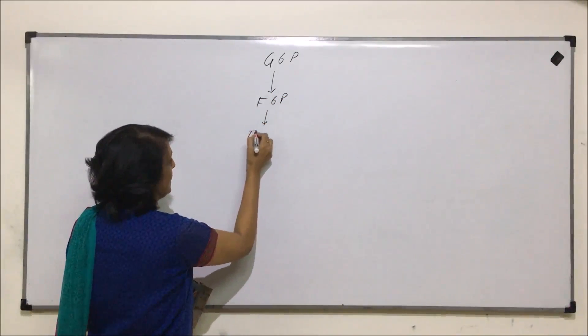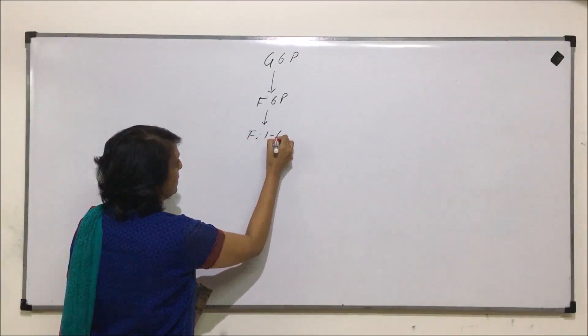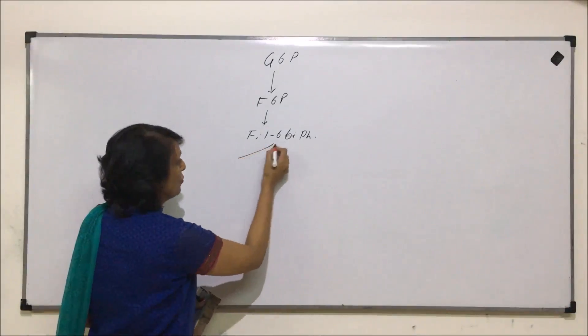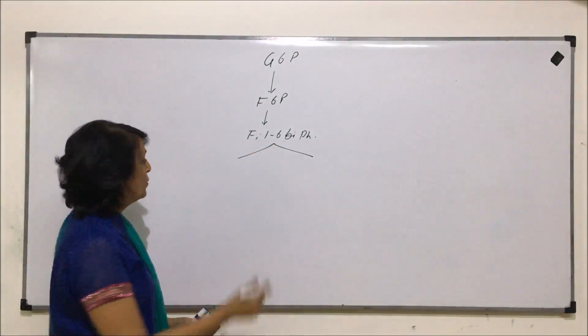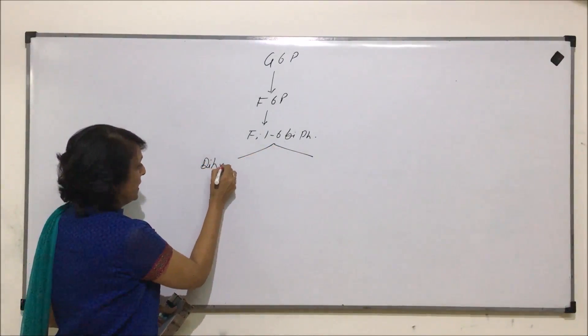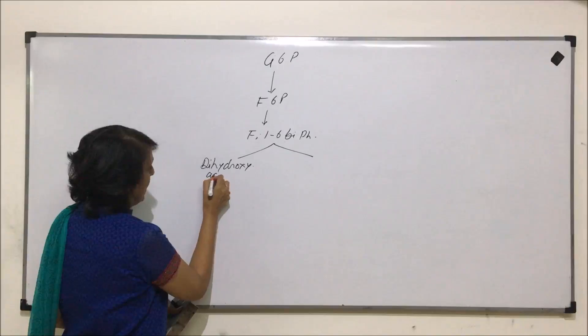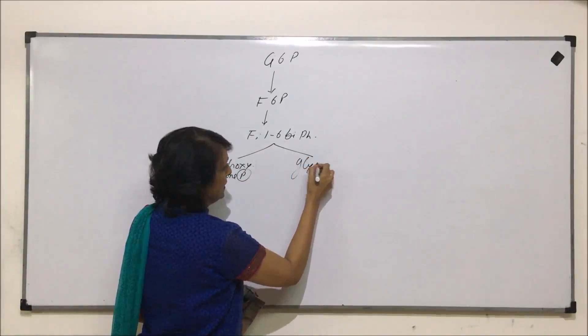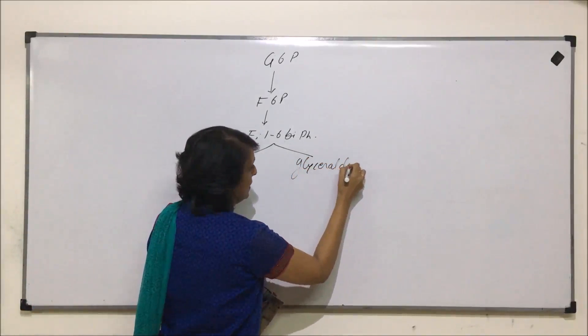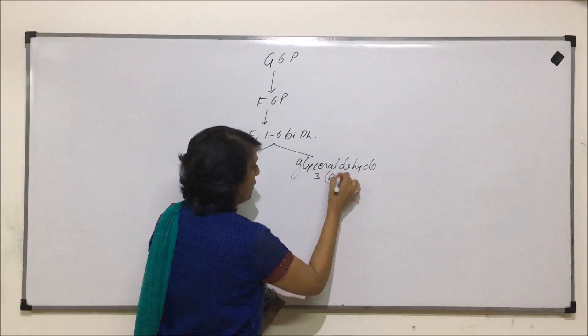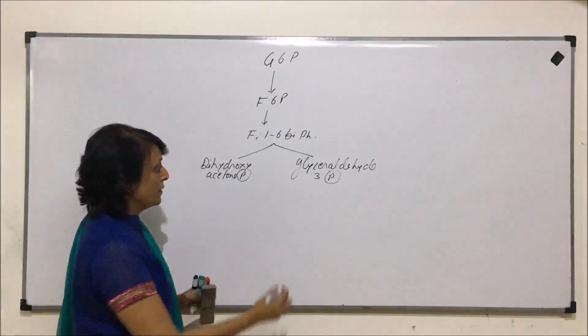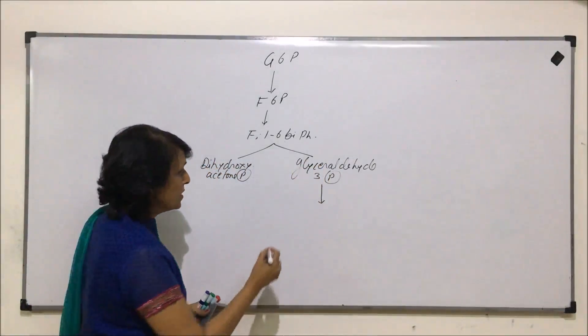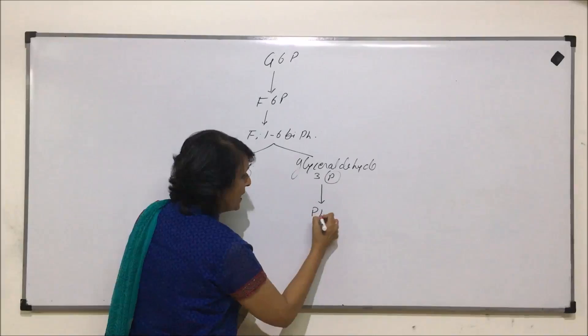Glucose 6-phosphate changes into fructose 6-phosphate and then fructose 1,6-bisphosphate. This dissociates to form three carbon compounds: dihydroxy acetone phosphate and glyceraldehyde 3-phosphate. This is the part of glycolysis that we are writing here.